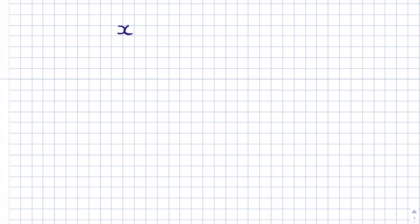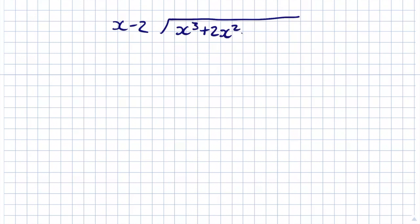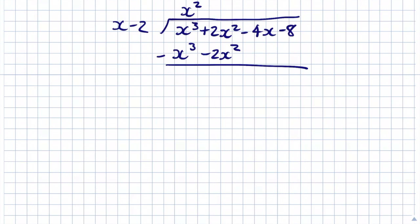We write (x - 2) outside the bus shelter and x³ + 2x² - 4x - 8 underneath. First, x goes into x³ giving x². Multiply x² by (x - 2): we get x³ and -2x². Subtract: x³ - x³ = 0, and 2x² - (-2x²) = 4x². Bring down -4x and -8, giving us 4x² - 4x - 8.